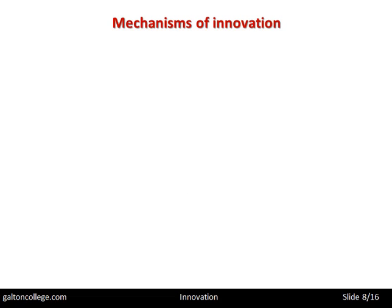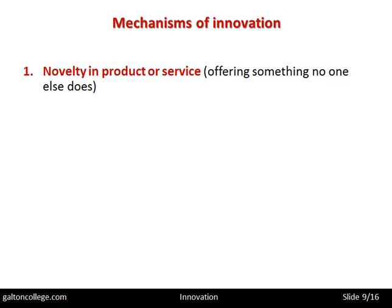Now, the mechanisms of innovation. First of all, it's a novelty in product or service — a newness in the product or service. It's offering something no one else does; it's having uniqueness in the market. This is highly desirable from the consumer's point of view, because consumers like new products, generally speaking. They like newness and modernity.